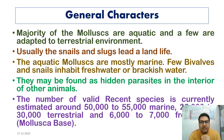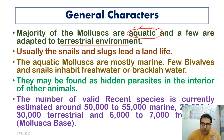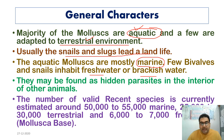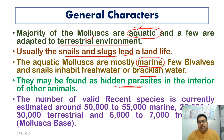Moving on to the general characters — the majority of mollusks are aquatic, with only a few adapted to terrestrial environments. Snails and slugs lead a terrestrial mode of living. Among aquatic mollusks, most are marine, while only a few bivalves and snails inhabit freshwater or brackish water. They may also be found as hidden parasites inside other organisms, so they can be both free-living and parasitic.